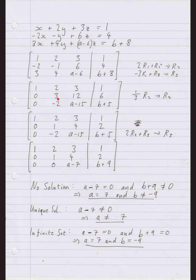Next I want to get a one in the second pivot position. The move here is to divide this row by three, or equivalently one-third times row two. The first row is unchanged, the third row is unchanged. Three becomes a one, twelve divided by three is four, six divided by three is two. Now I have one, zero, zero, one.